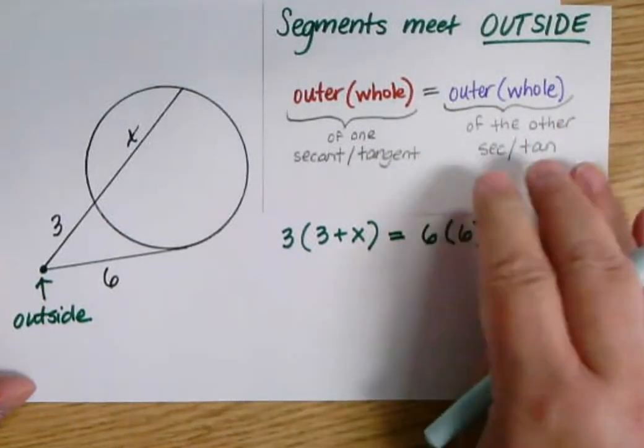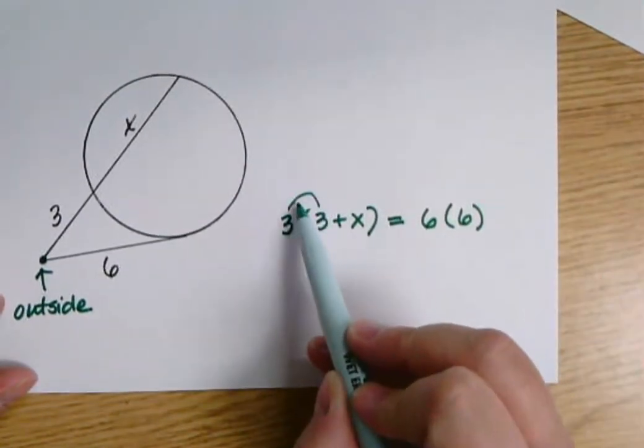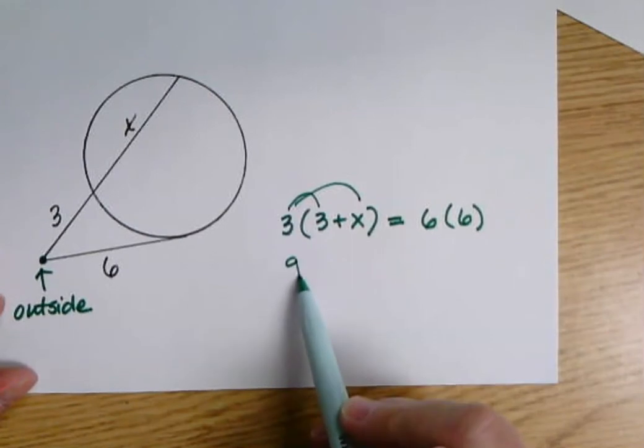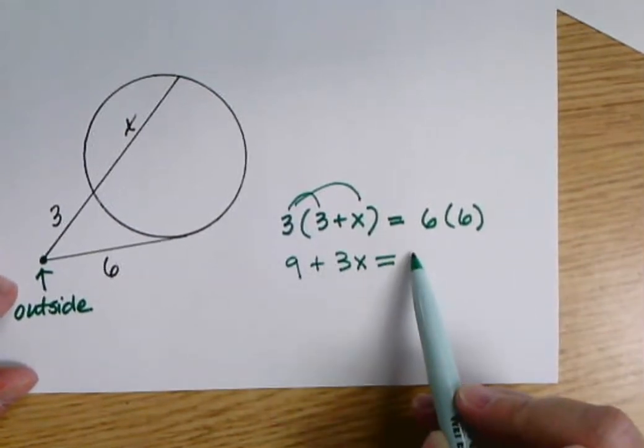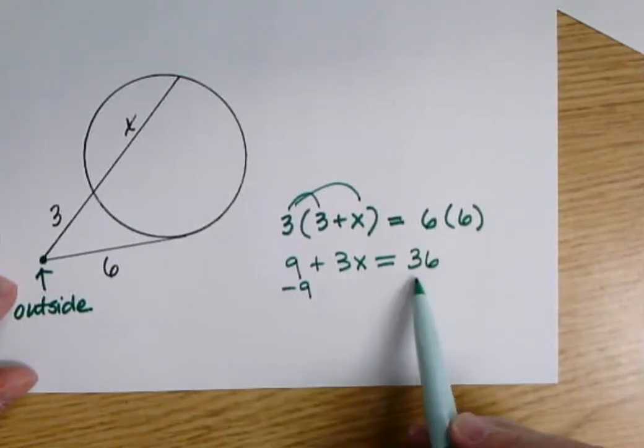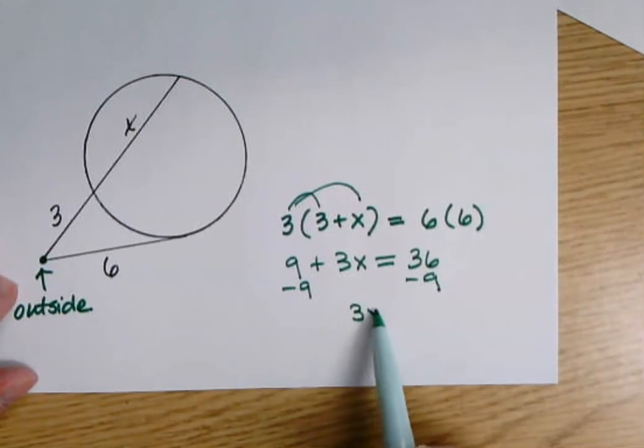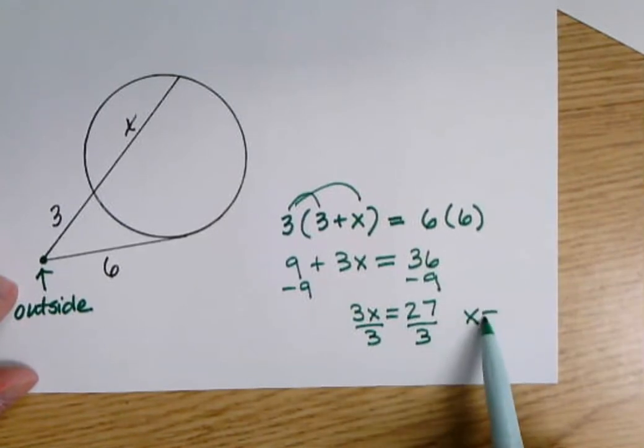So I have my equation. Now I'm ready to solve it. I'm going to distribute. Three times three is nine. Three times X is three X. Six times six is 36. So now I can subtract nine from both sides. I get three X equals 27. And when I divide both sides by three, I get X is nine.